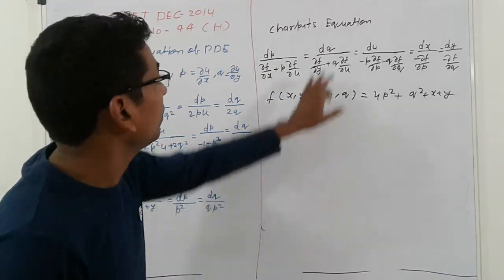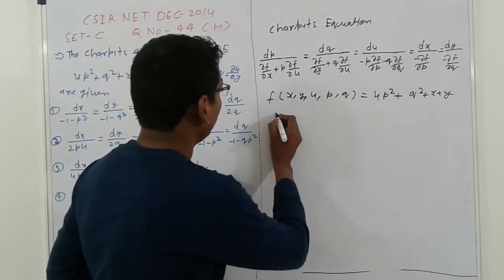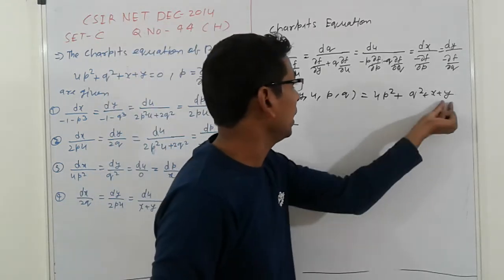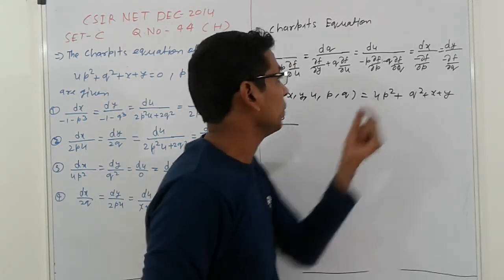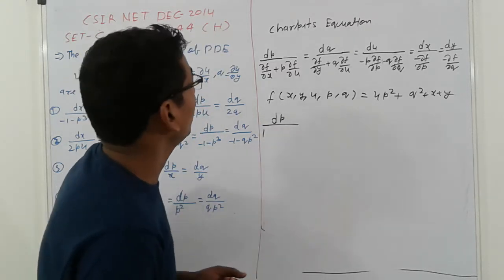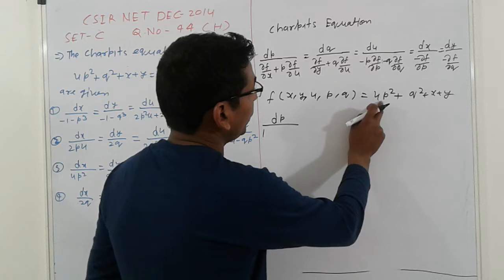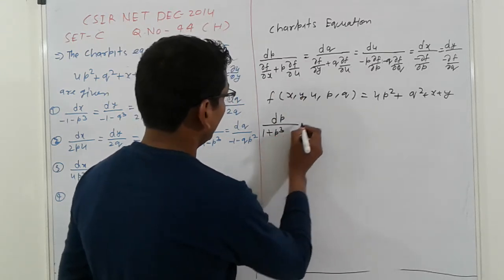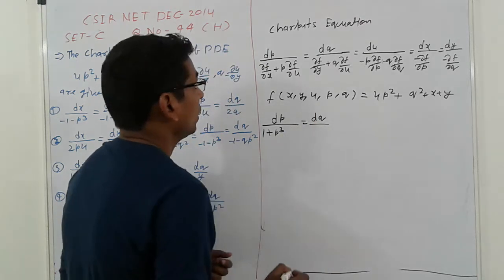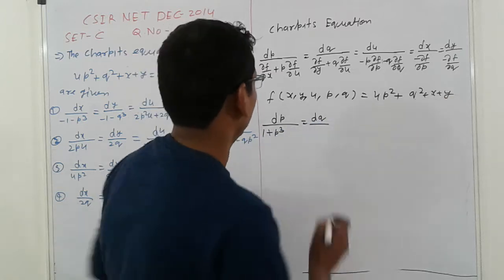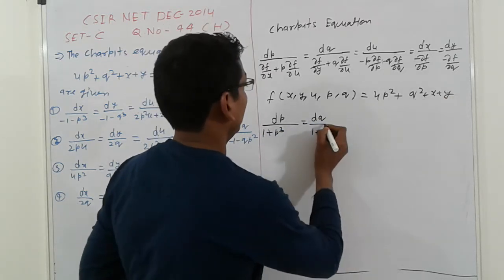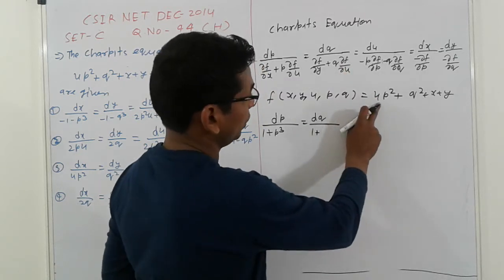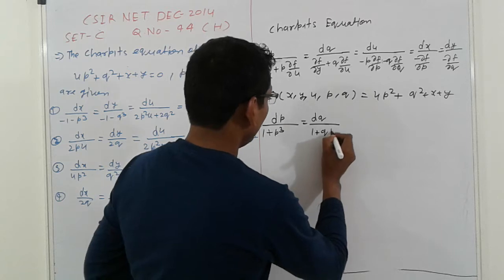The Charpit equation is here, so we simplify it directly. dP equals — how much? dF upon dX: here dF/dX gives 1. Next, dF/dY: here dF/dU gives P squared, and plus P here, so plus P cubed for dQ. Then dF/dY gives 1, plus next term Q into dF/dU, so dF/dU gives Q.